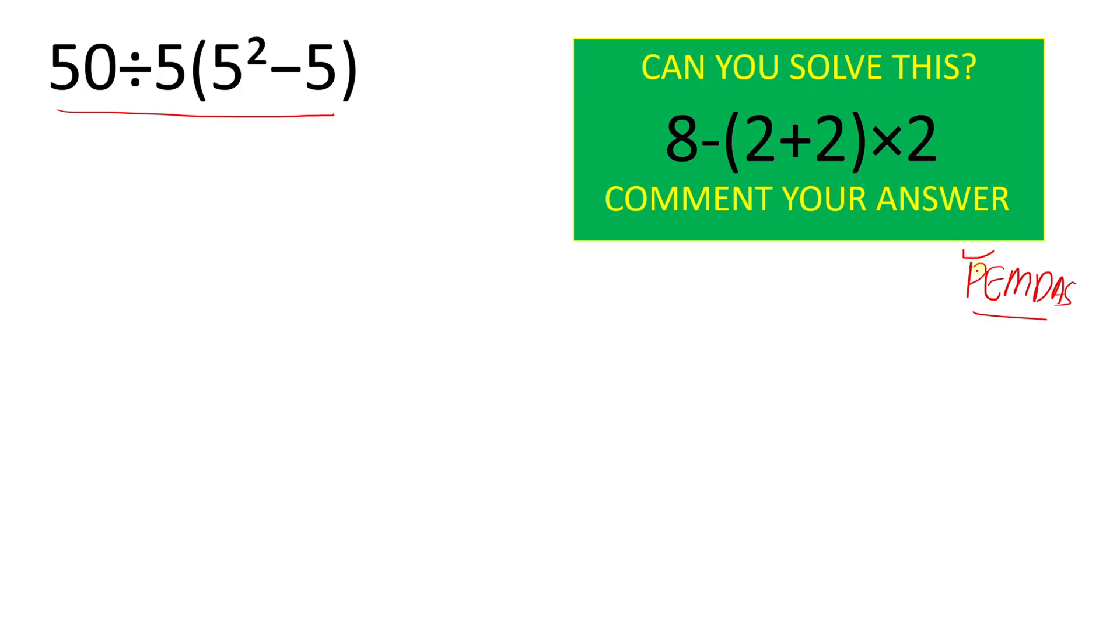According to PEMDAS, first we will translate this parenthesis part which has an exponent part which is 5 square. 5 square is nothing but 5 times 5 which equals 25. So we can put value here 25 on the place of 5 square. So we can rewrite 50 divided by 5, parenthesis 25 minus 5.